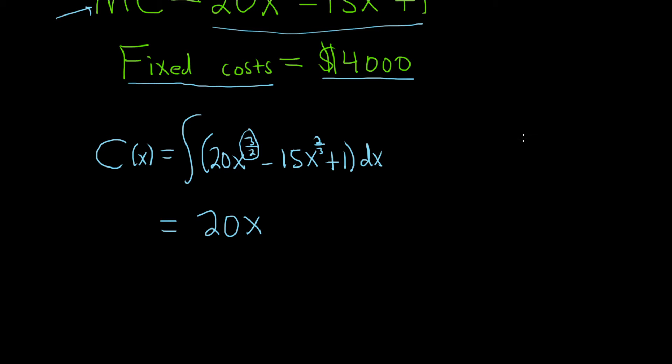So we have 3 halves plus 1. So 3 halves plus 1 is really 3 halves plus 2 halves, which is 5 halves. So we put a 5 halves here. And the power rule says that we divide by 5 halves, so I'll go ahead and divide by 5 halves.